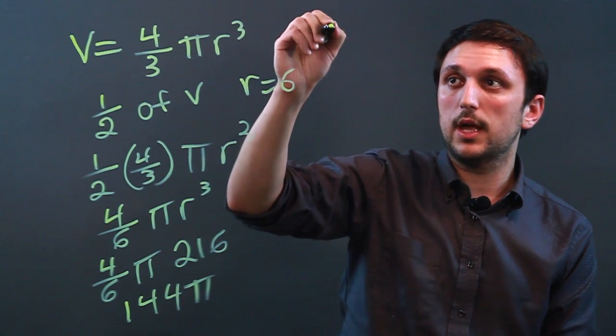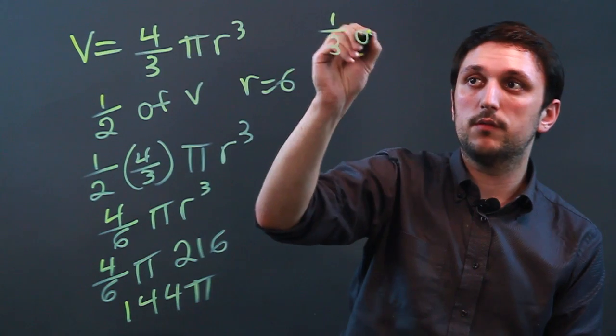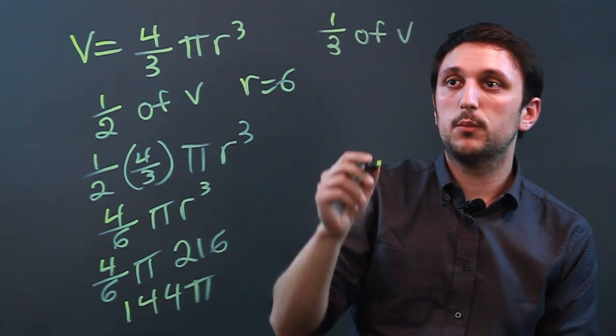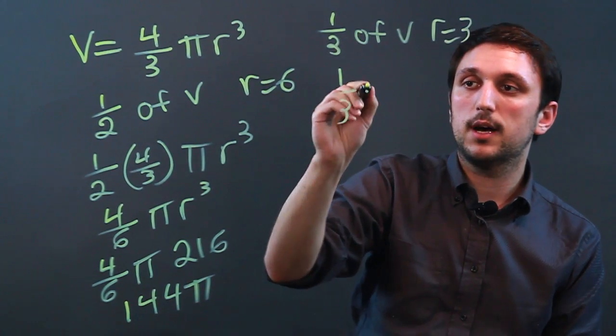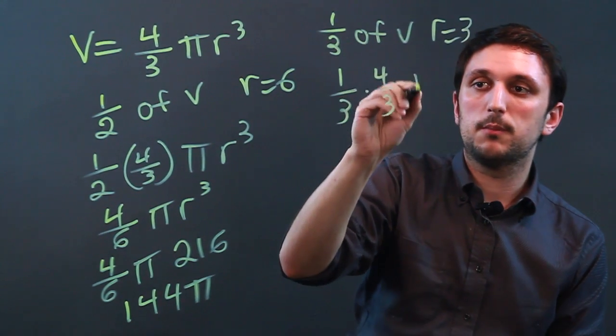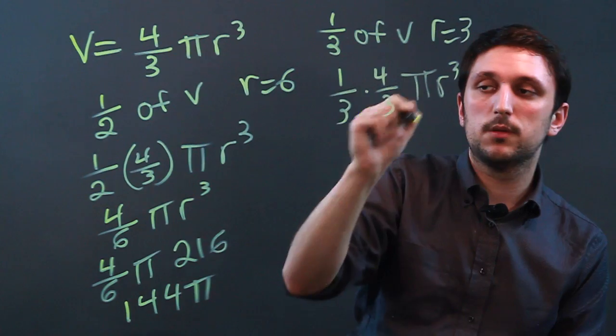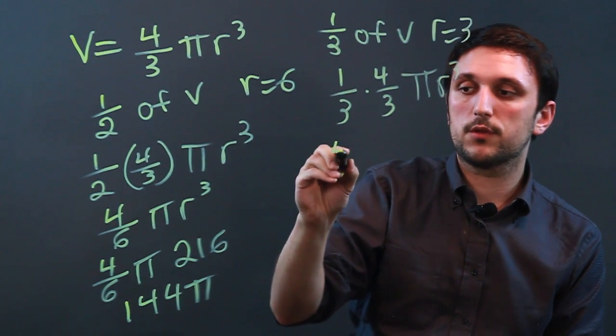What if we wanted a different volume, like one-third of volume. And we say r equals three. Here we go one-third times four-thirds times pi r cubed. And one-third times four-thirds is going to be four-ninths.